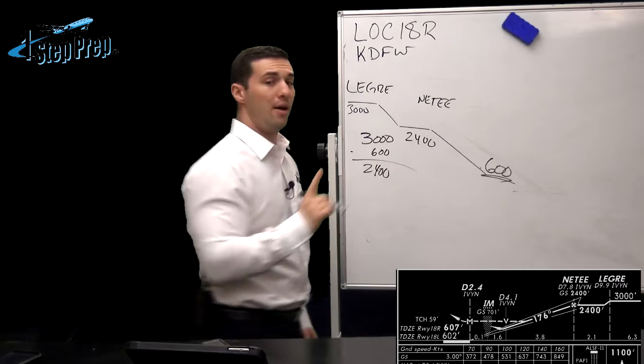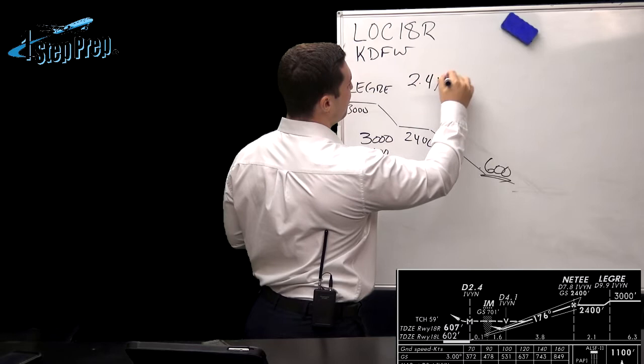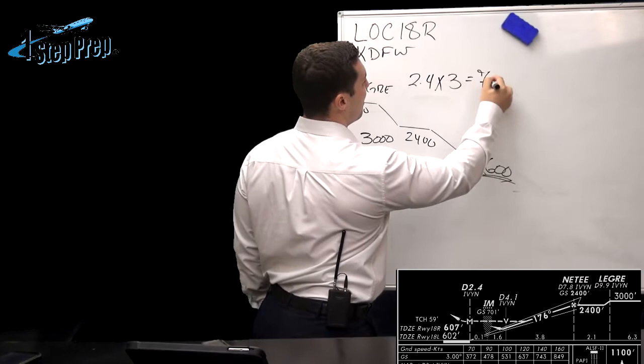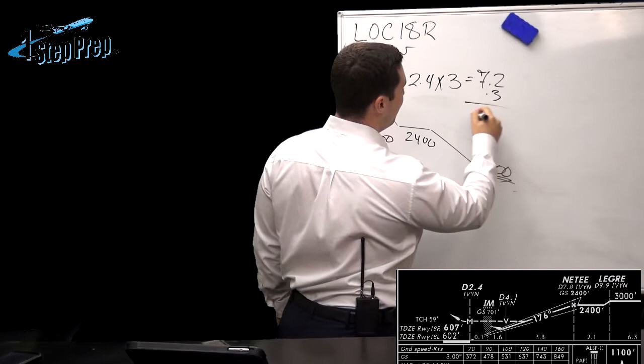Now, 2,400 feet to lose, divide 2,400 by 1,000, and you end up with 2.4. Make some room over here. I got 2.4 times 3. And what do we get? 7.2. 7.2 nautical miles from the runway is when we're going to start down. Now, you still got to add your 0.3 for your Airbus Pixie Dust. Here we go. 0.3 to this, 7.5 now from the runway.